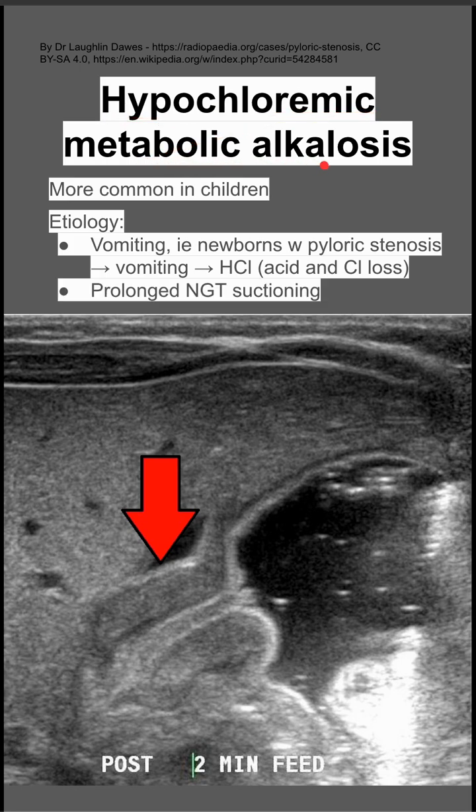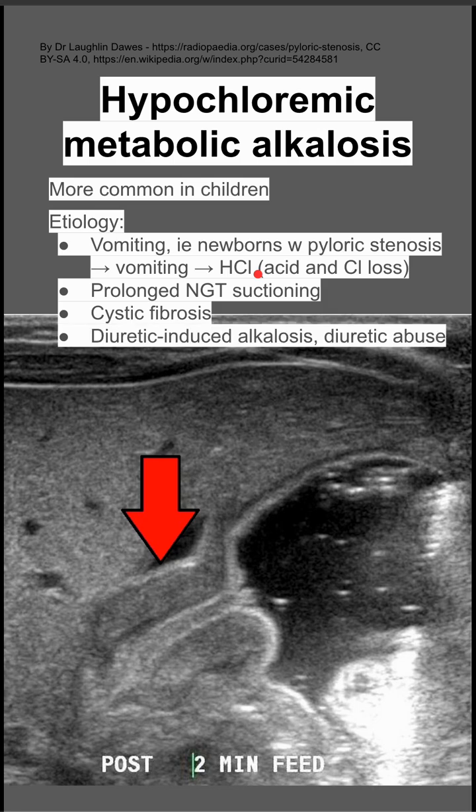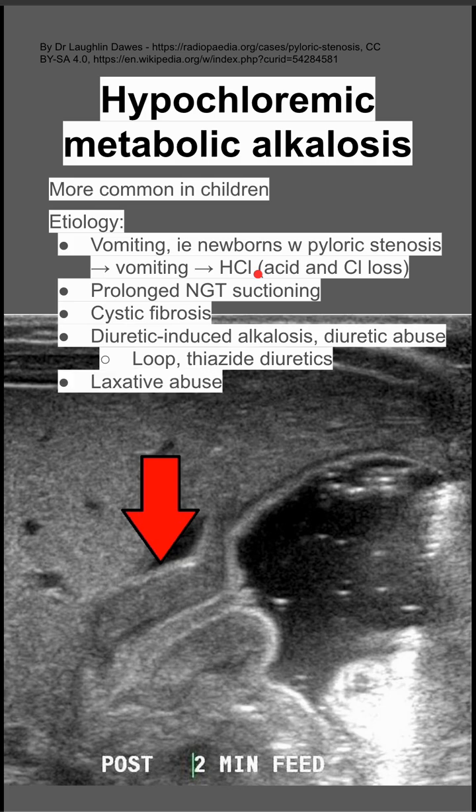Other things that can cause this are prolonged NG-tube suctioning — same thing, you lose that hydrogen chloride. Cystic fibrosis, diuretic-induced alkalosis, or diuretic abuse. Loop diuretics and thiazide diuretics, if you use too much, can cause this condition.